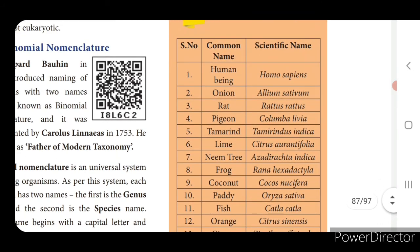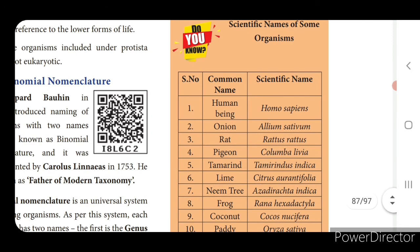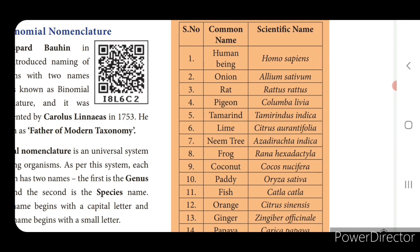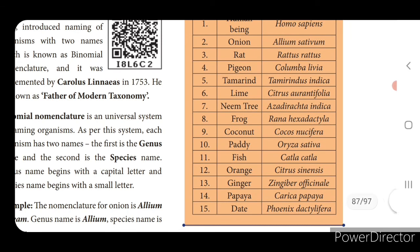Here 15 binomial names are given as common name and scientific name - another name for binomial nomenclature is scientific name. Human being - Homo sapiens; onion - Allium sativum; rat - Rattus rattus; pigeon - Columba livia; tamarind - Tamarindus indica; lime - Citrus aurantifolia; neem tree - Azadirachta indica; frog - Rana hexadactyla; coconut - Cocos nucifera; paddy - Oryza sativa; fish - Catla catla; orange - Citrus sinensis; ginger - Zingiber officinale; papaya - Carica papaya; date - Phoenix dactylifera. Read only the names asked in the evaluation part.